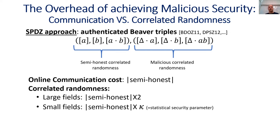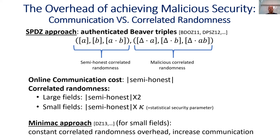However, the amount of correlated randomness grows. Specifically for large fields, it grows by a factor of 2, but for small fields or rings, it grows by a factor of kappa, where kappa is the statistical security parameter, because the authenticated triple needs to be generated over an extension field with size that depends on the statistical parameter. This is necessary to achieve cheating probability that is sufficiently small. A different approach was first introduced in the Minimac protocol for small fields, and this approach achieves constant correlated randomness overhead that does not depend on the statistical parameter, achieved by authenticating multiple triples together. But this comes at the expense of increasing the communication cost, so the communication cost with malicious security is higher than the cost with semi-honest security. There is a trade-off between the communication overhead and the correlated randomness overhead for malicious security.